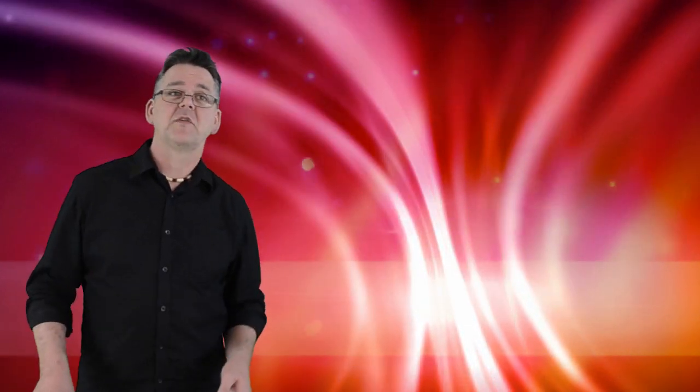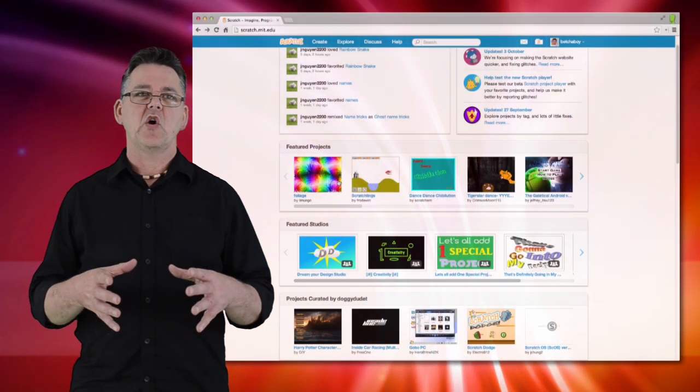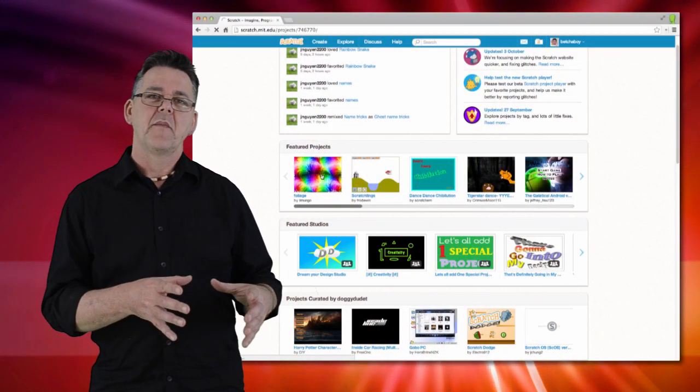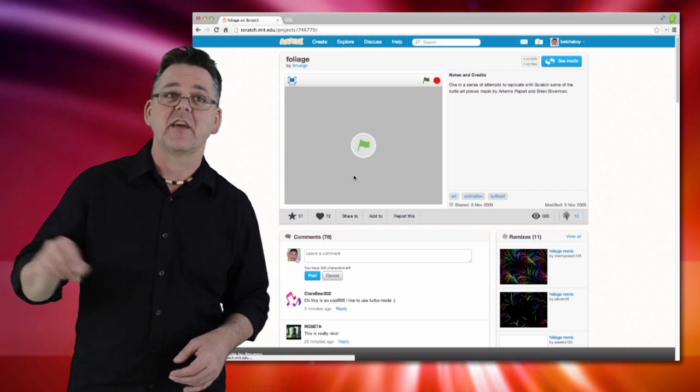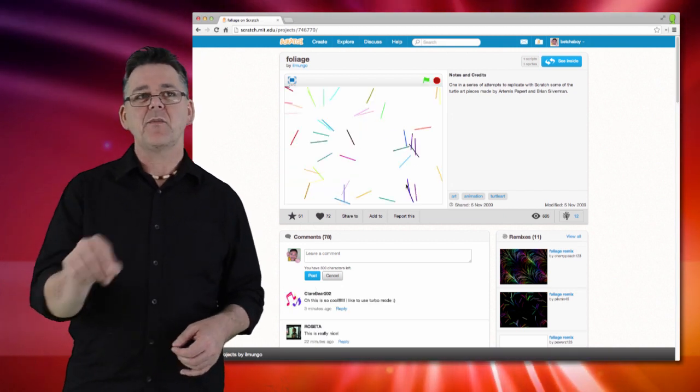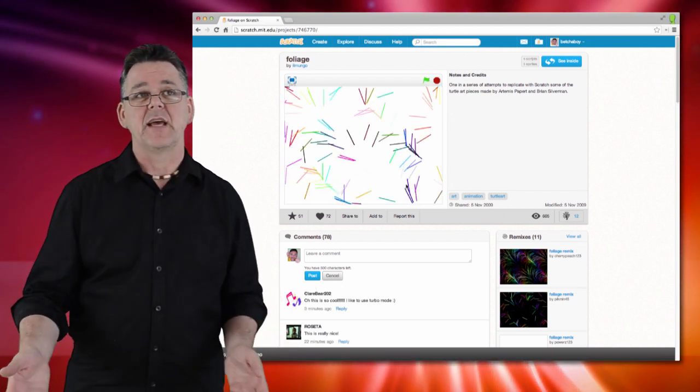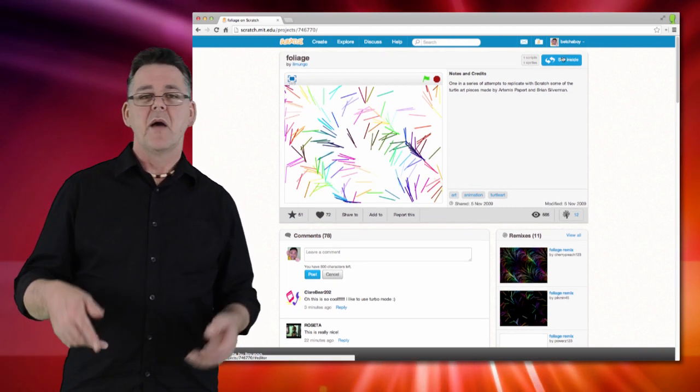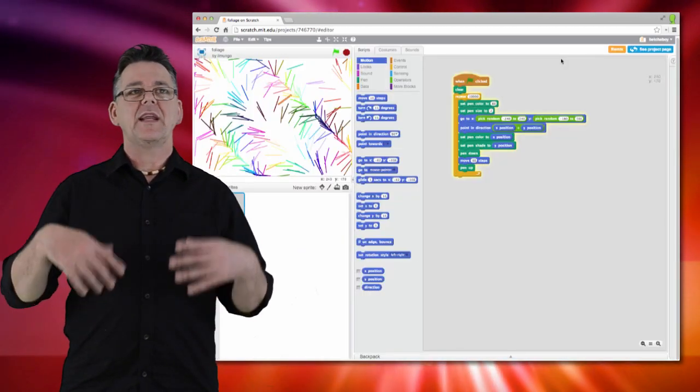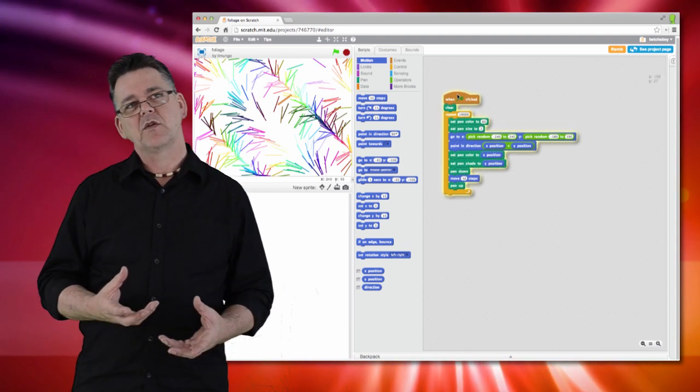All of these environments we've mentioned have one very important feature in common. Not only do they allow you to create code that gives a predictable result, they also let you see how the code was created. If you see someone else's program, so in Scratch for example, you can not only run the program and see its output, but more importantly, you can get inside it and see exactly how it was put together.